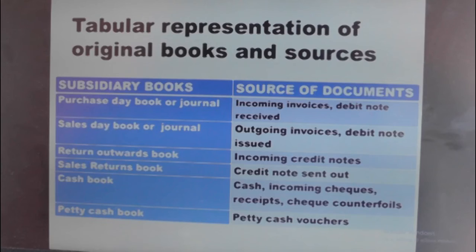Then we have the final one, which is the Petty Cash Book. The Petty Cash Book's only source of documents is the Petty Cash Voucher.